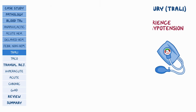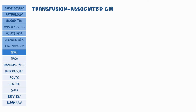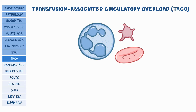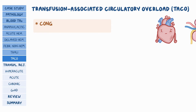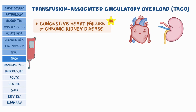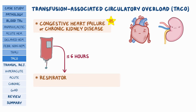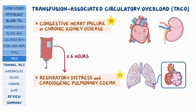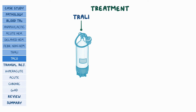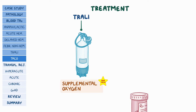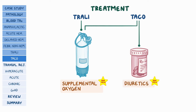A similar reaction is transfusion-associated circulatory overload, or TACO. All blood products are packed in fluid, making fluid overload a potential complication of transfusions. In a test question, look for an individual with congestive heart failure or chronic kidney disease who presents within 6 hours of transfusion with respiratory distress and cardiogenic pulmonary edema. Treatment differs: TRALI is treated with respiratory support and supplemental oxygen, while TACO treatment includes diuretics in addition to supplemental oxygen.